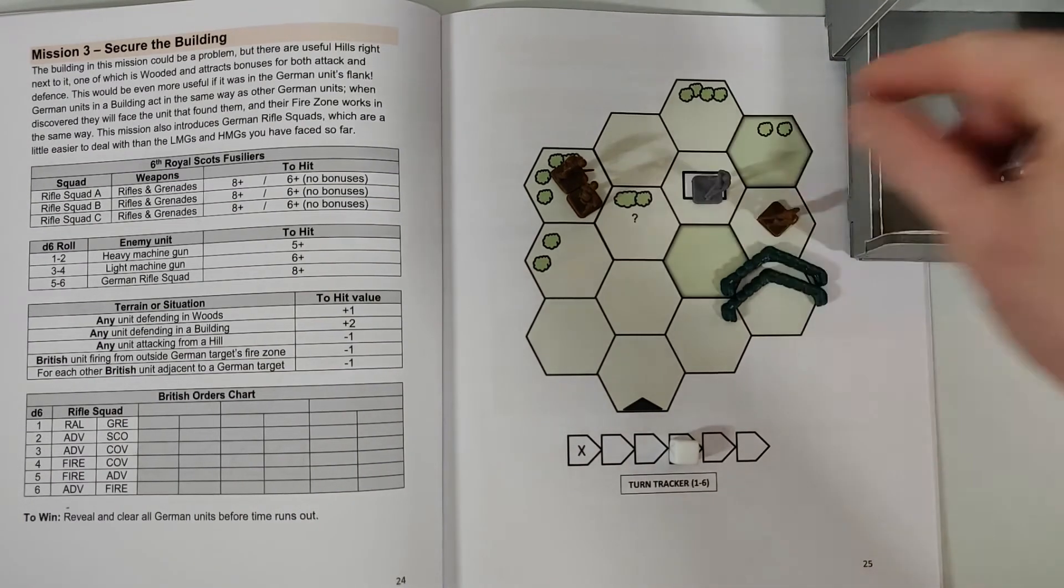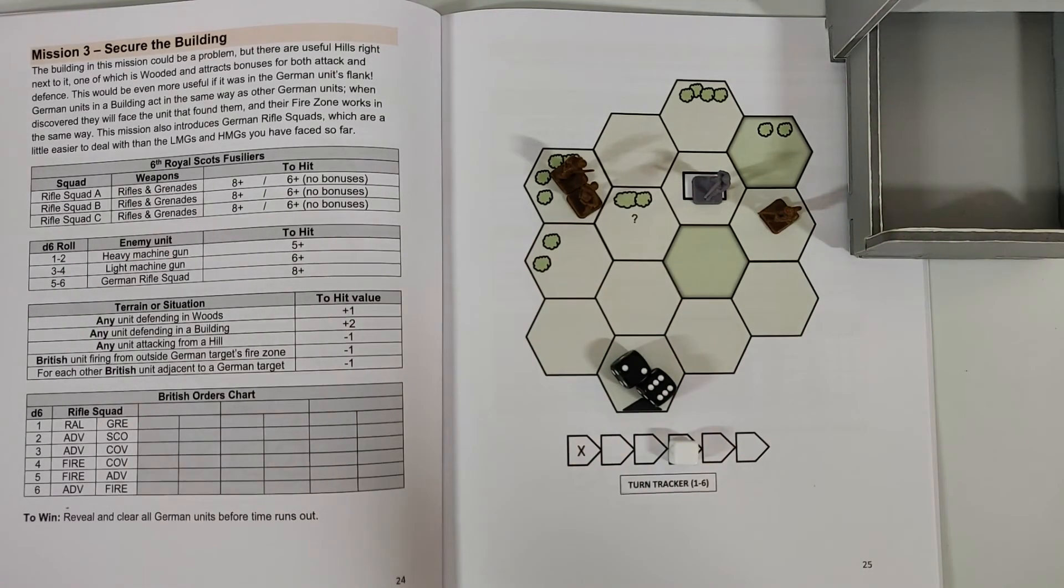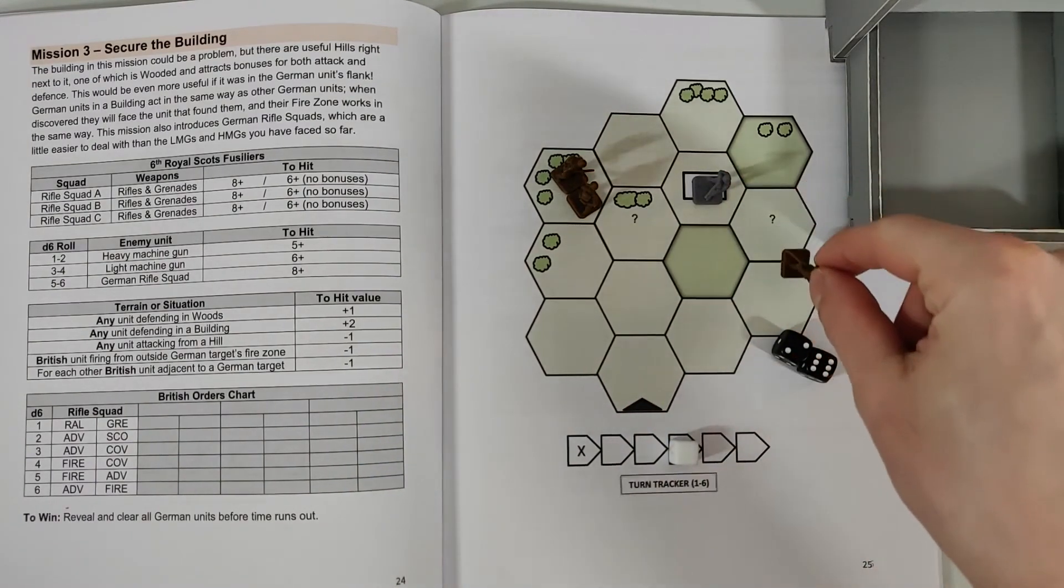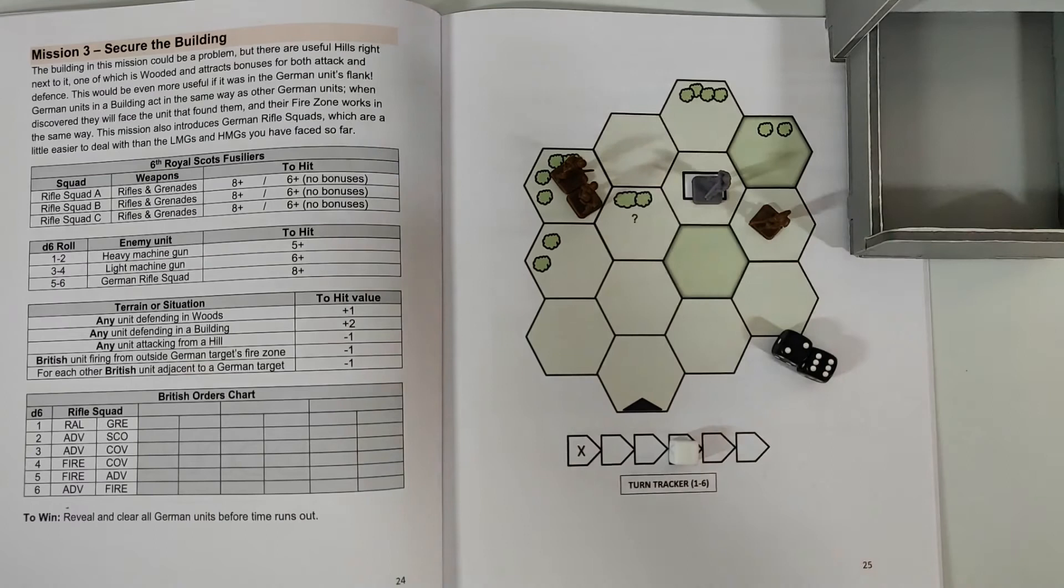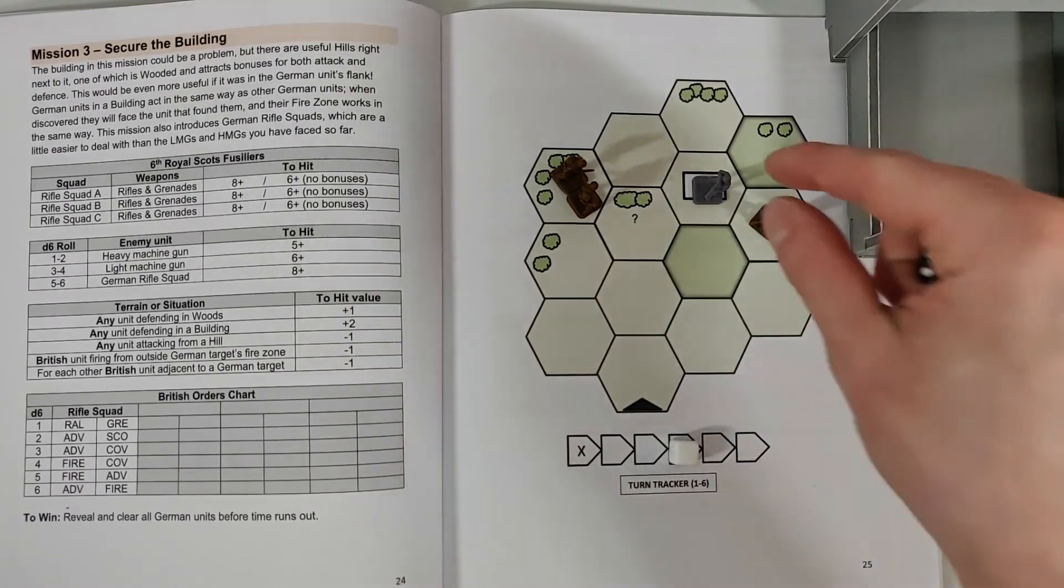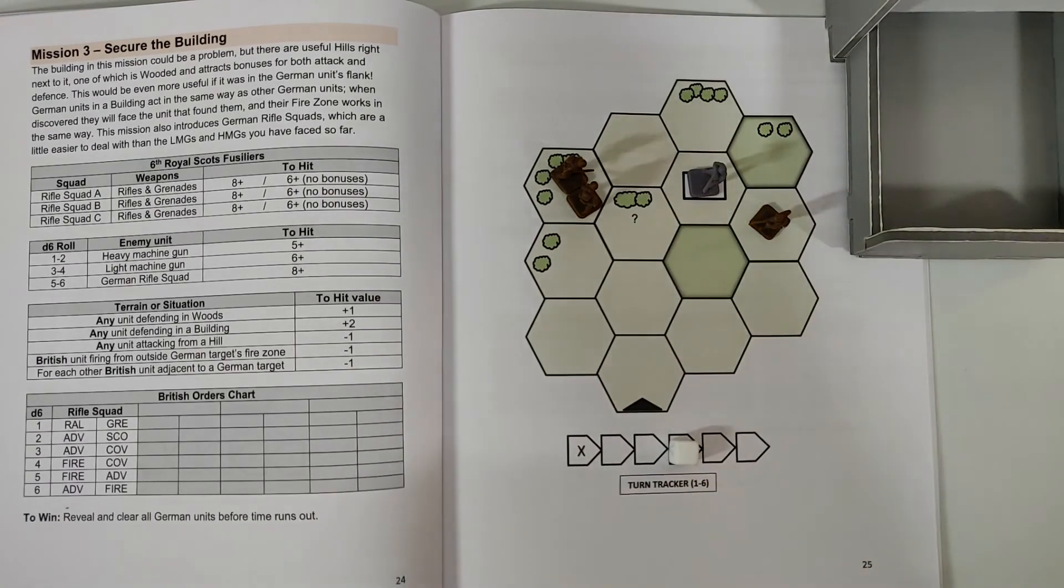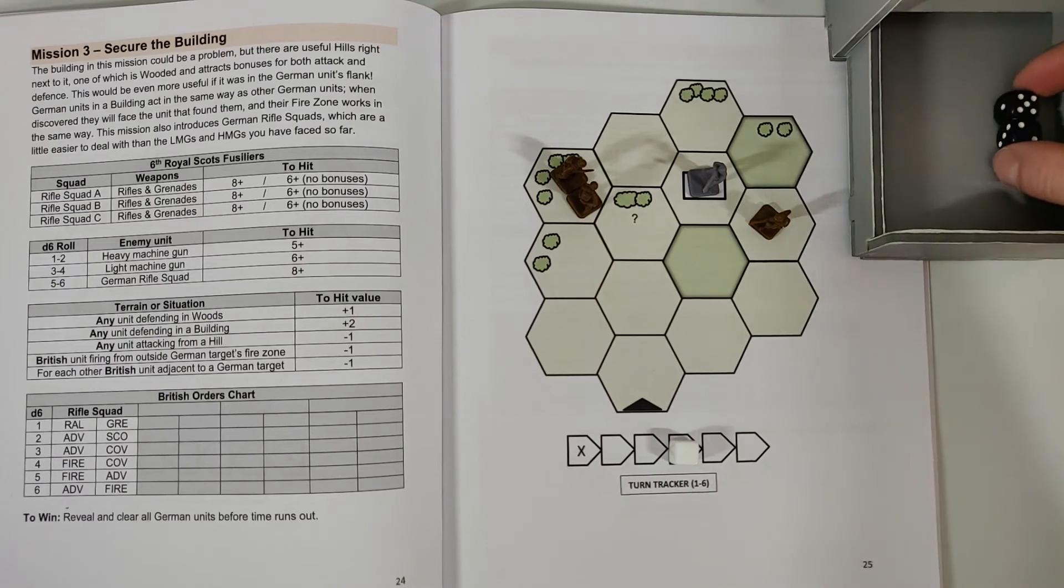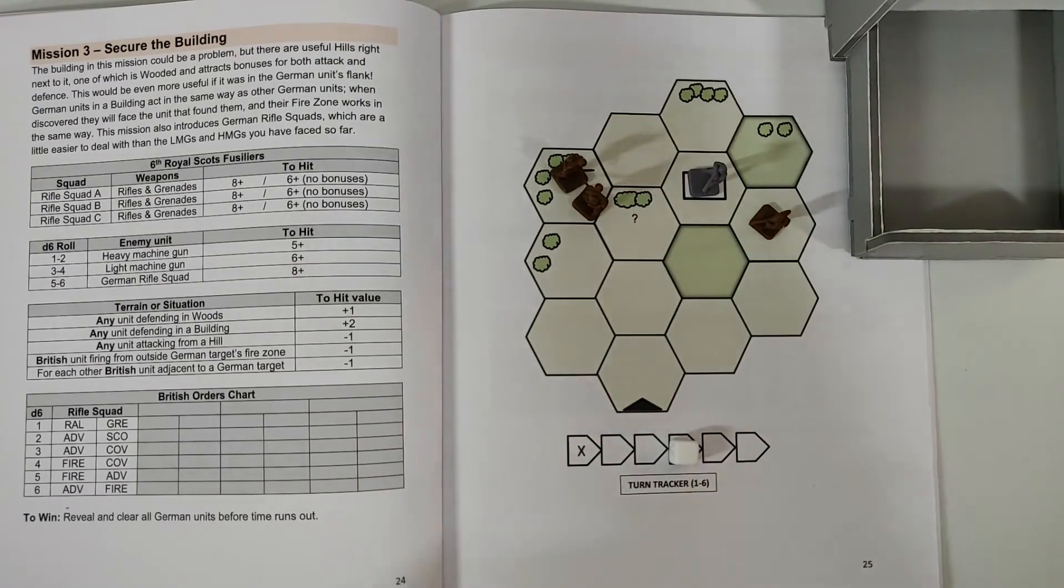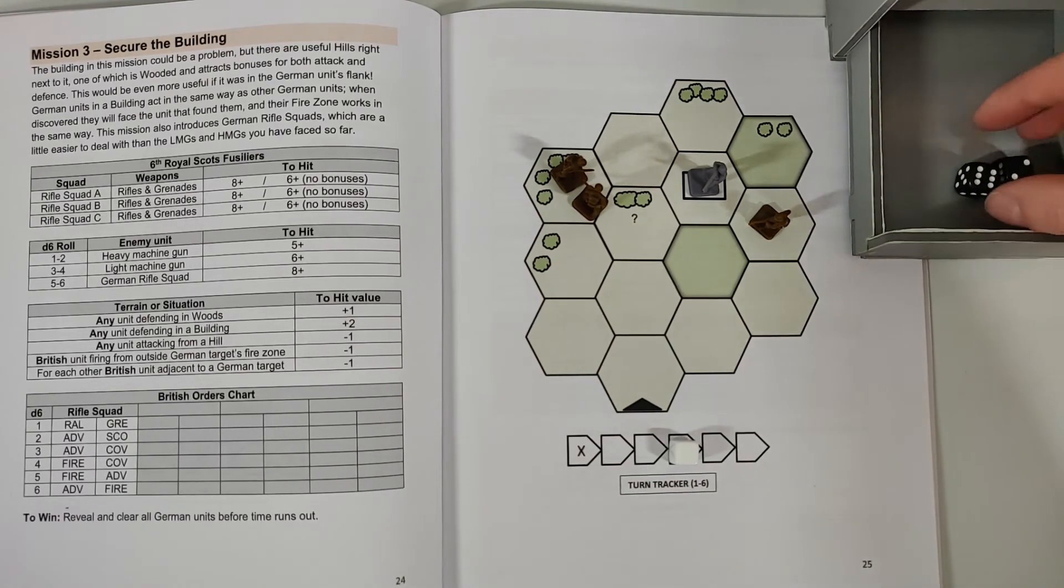We roll two and six - six is advance and fire, so we go ahead and advance. This guy is in a building now. We'll remove these covers. So since he's in the building, he gets a plus two defense, and I'm also in his arc of fire, so I am not effectively flanking him. So instead of an eight, I'm gonna need a 10 or higher to actually take him out. And I roll a seven, so that's not good enough. I don't manage to take him out. Okay, we go to the next squadron.